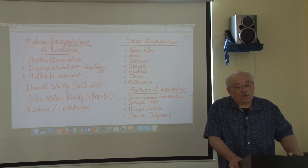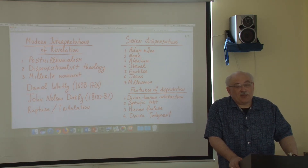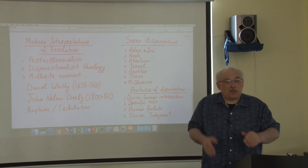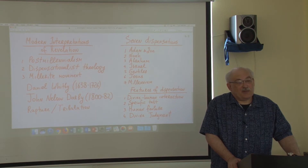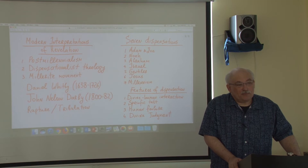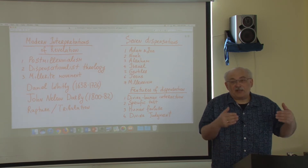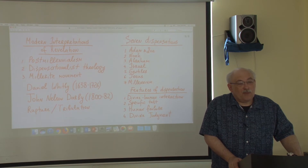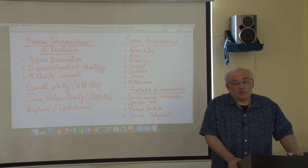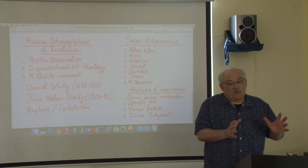Let's briefly discuss the dispensations Darby outlined. The first is the dispensation of Adam, the very beginning of the Bible. Adam and Eve receive revelation from God in the Garden of Eden. The specific test associated with this situation is not to eat from the tree of knowledge of good and evil. Adam and Eve succumb to temptation, and as a result they are punished — in fact, everyone is punished: Adam, Eve, and the serpent. That follows the pattern well.